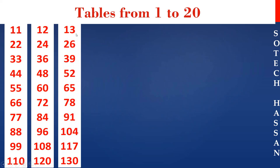13th table: 13 1s are 13, 13 2s are 26, 13 3s are 39, 13 4s are 52, 13 5s are 65, 13 6s are 78.